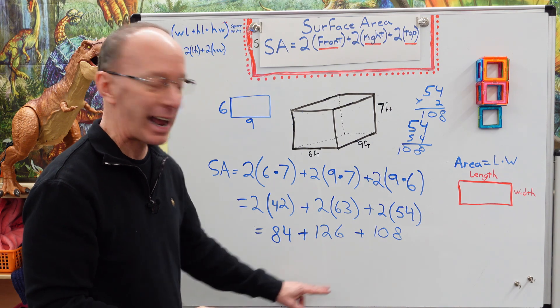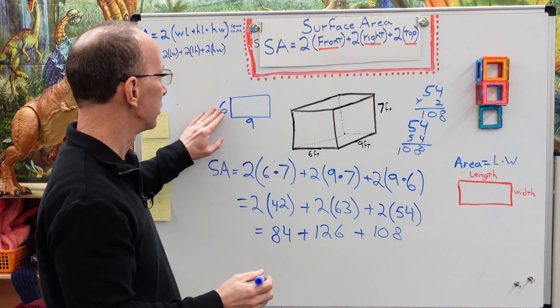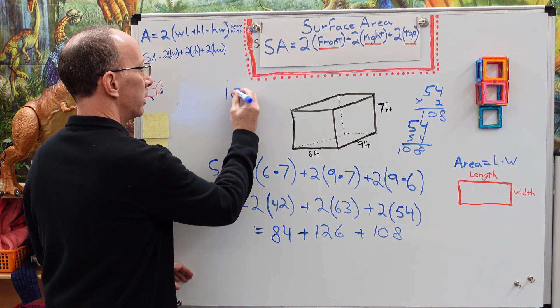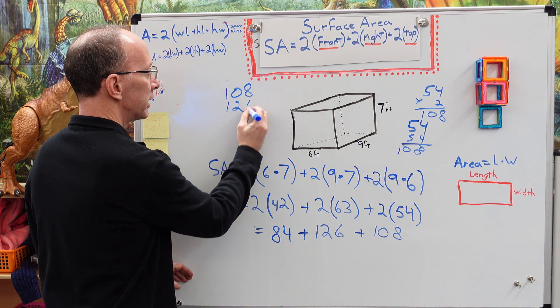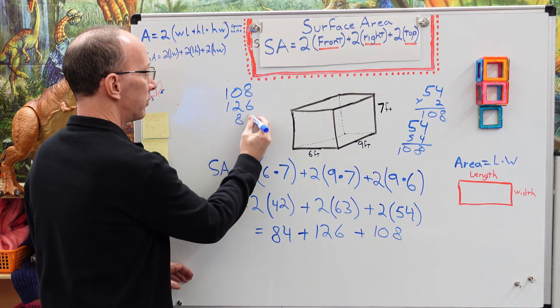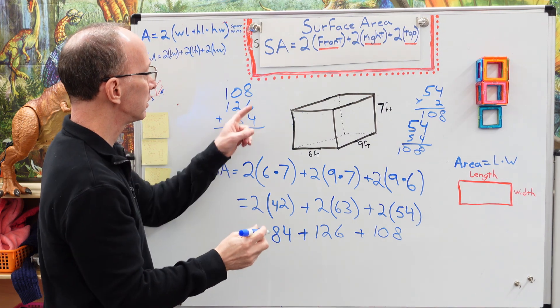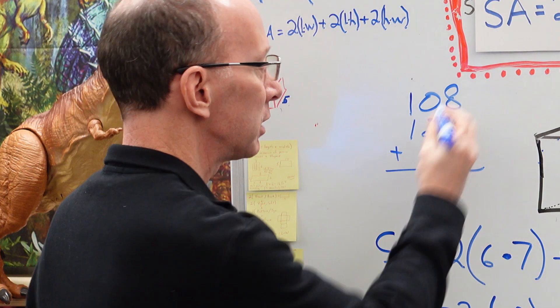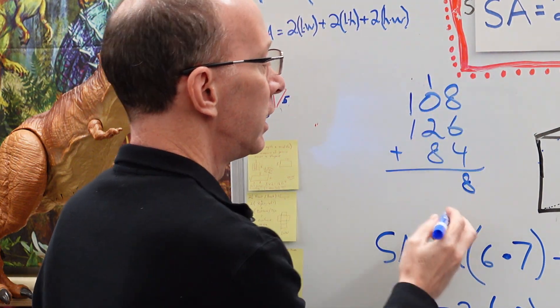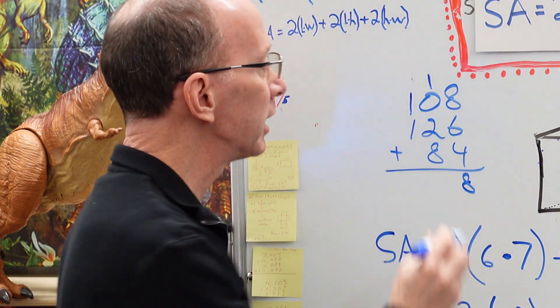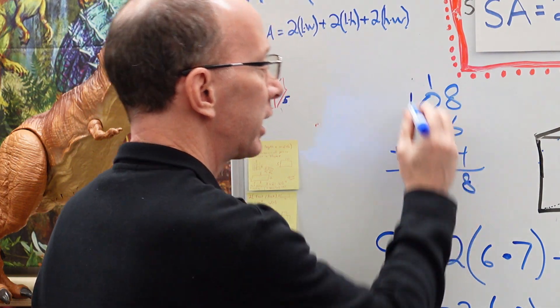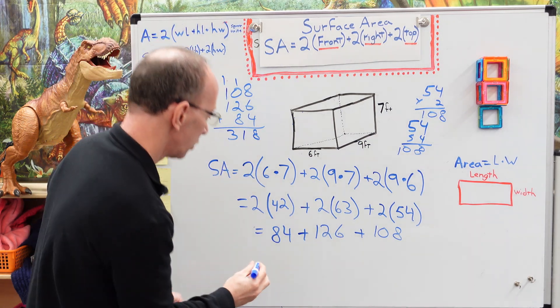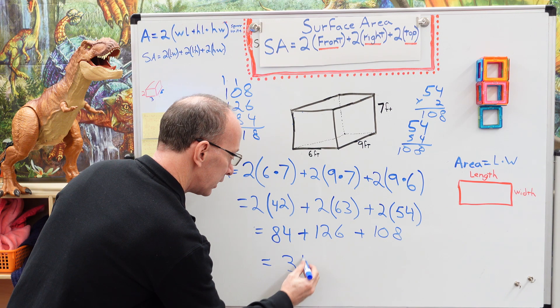Now we have to go ahead and add these up. So I'm going to go ahead and erase this so I can do a little figuring here. And so I'm going to go ahead and put 108 and 126 and 84. Add these up, add the ones. I always like to look for something that's easier to add up. So six and four would be 10 plus the eight would be 18. Carry the one. We have eight and two is 10. Don't forget that one up there. And that's 11. Carry the one. One, two, three. Uno, dos, tres. All right. So we have 318.